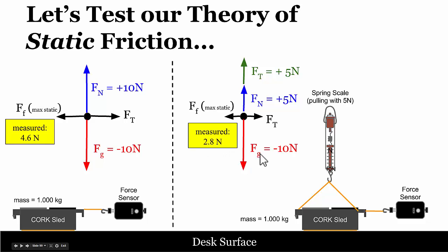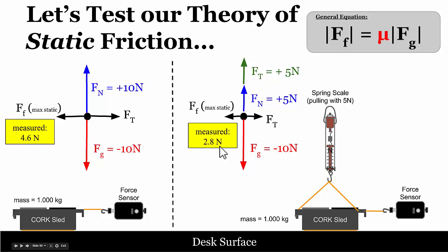Gravity staying the same didn't mean the frictional force would stay the same. What changed between the two situations is the normal force: here the normal force was 10 N with a frictional force of about 4.6 N; there the normal force was about half the size and the measured maximum static frictional force was also about half. So it seems the force of friction is not proportional to the force of gravity — it's proportional to the normal force, which is really the amount of force actually pushing the two surfaces together.